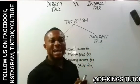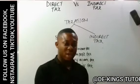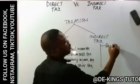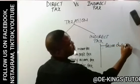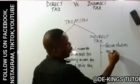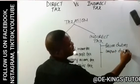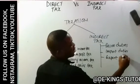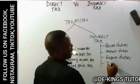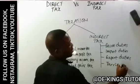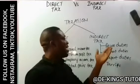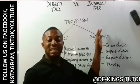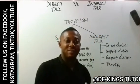While indirect taxes are taxes that are imposed on goods and services. Examples of this type of tax include: excise duty, import duties, export duties, and tariffs. These are examples of indirect taxes that are imposed on goods and services.